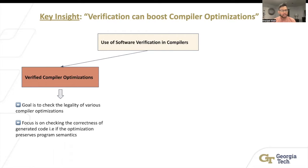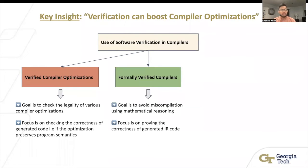Verification is being used in a lot of compiler literature. One aspect is verified compiler optimization. The idea here is that it checks the legality of various compiler optimizations, meaning that it's focusing on the correctness of the generated code, if it follows the program semantics. There's also formally verified compiler. The goal here is to avoid miscompilation and they use mathematical reasoning to make sure that it happens. They want to make sure the correctness of the generated IR code is correct.